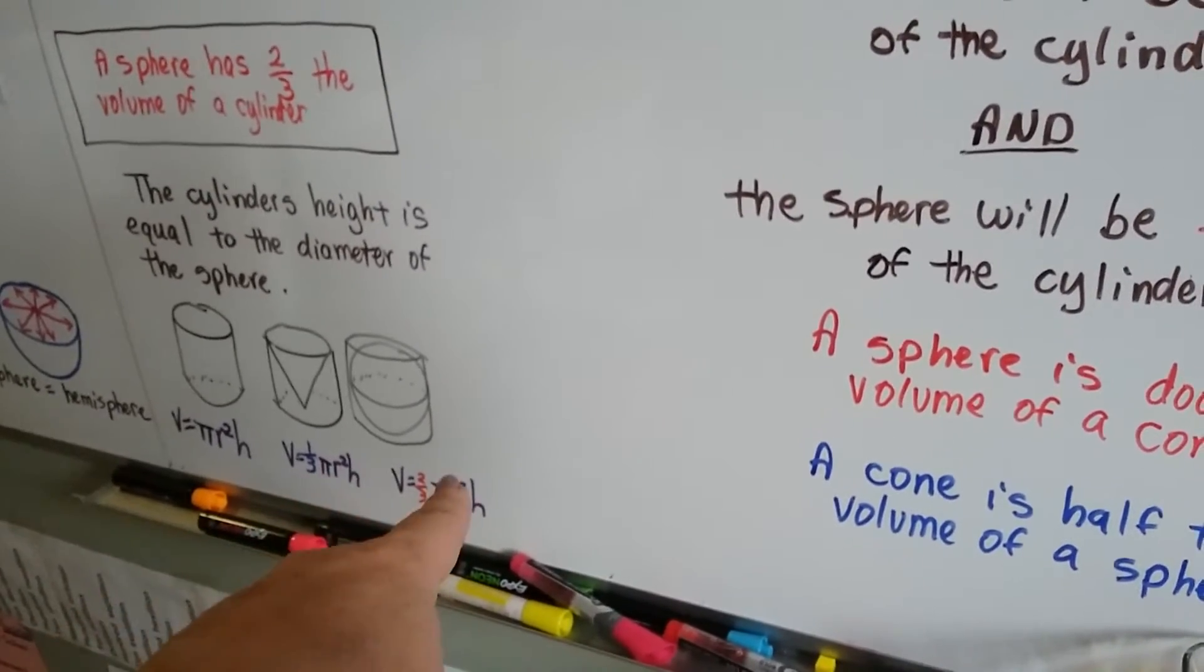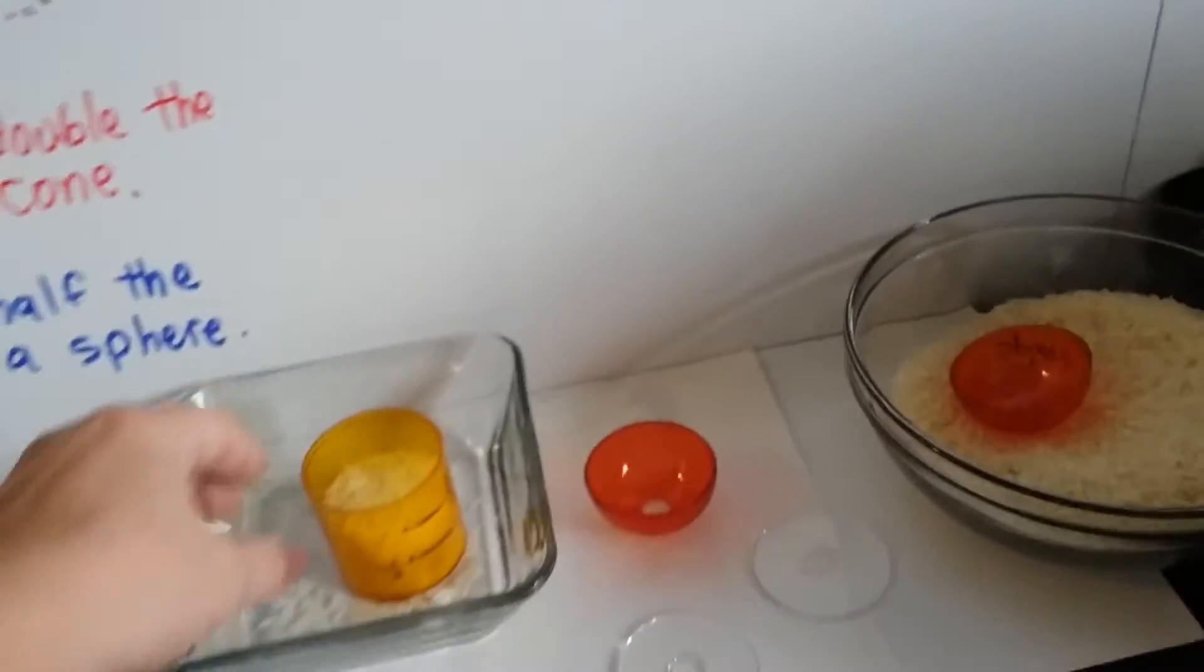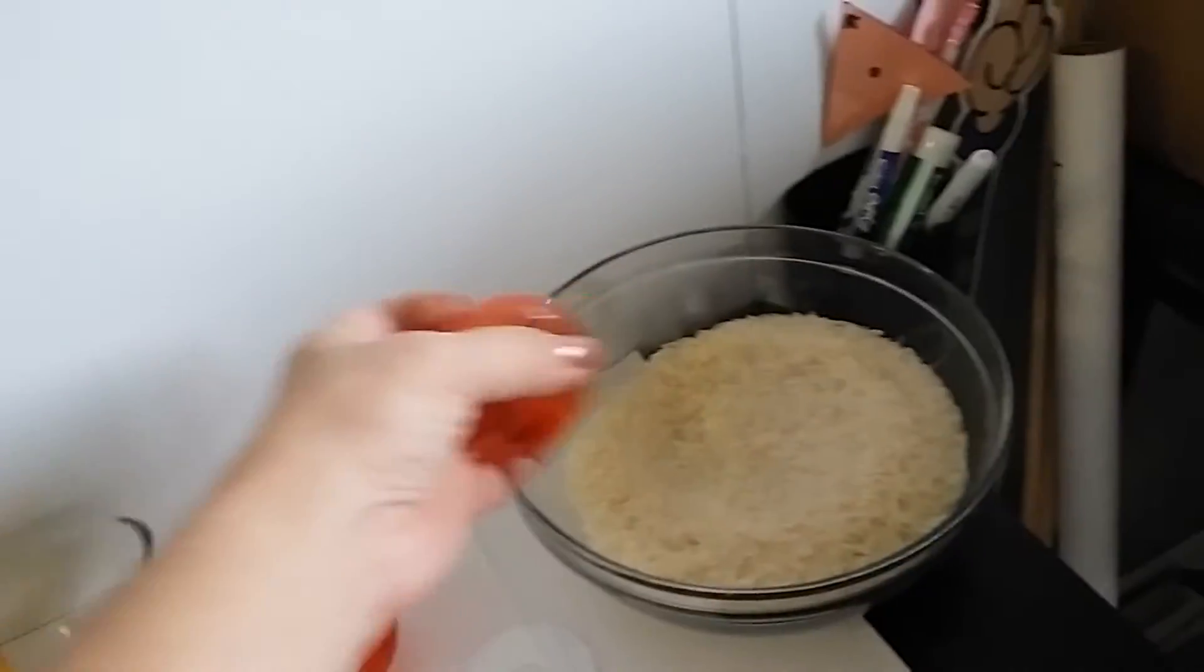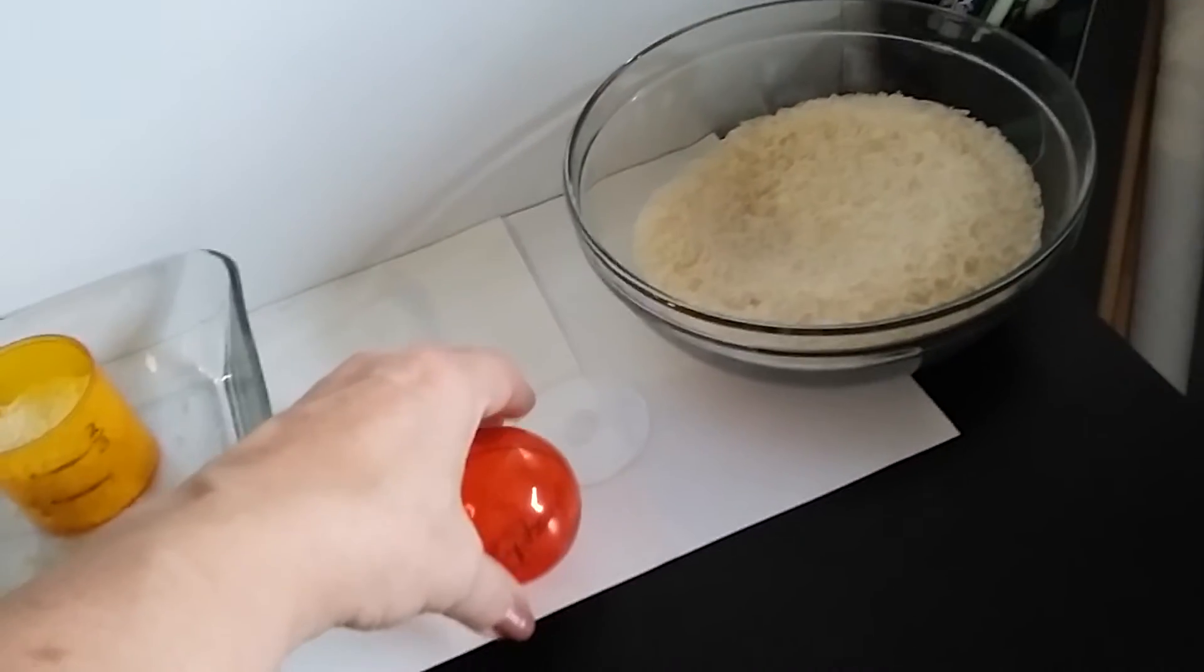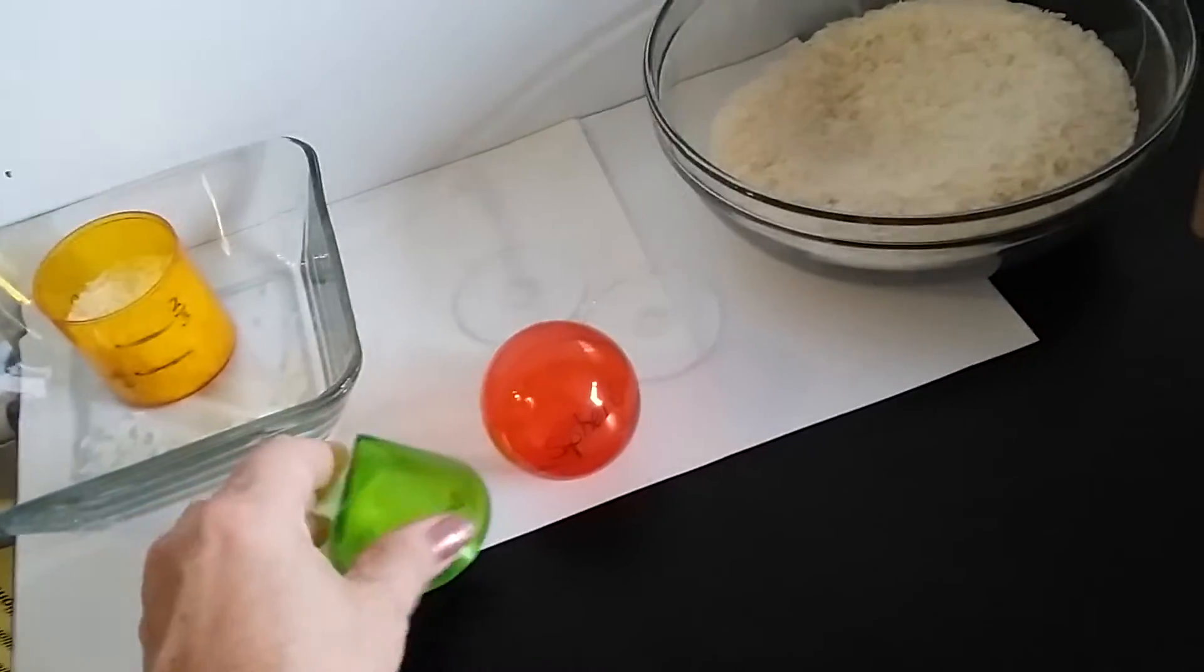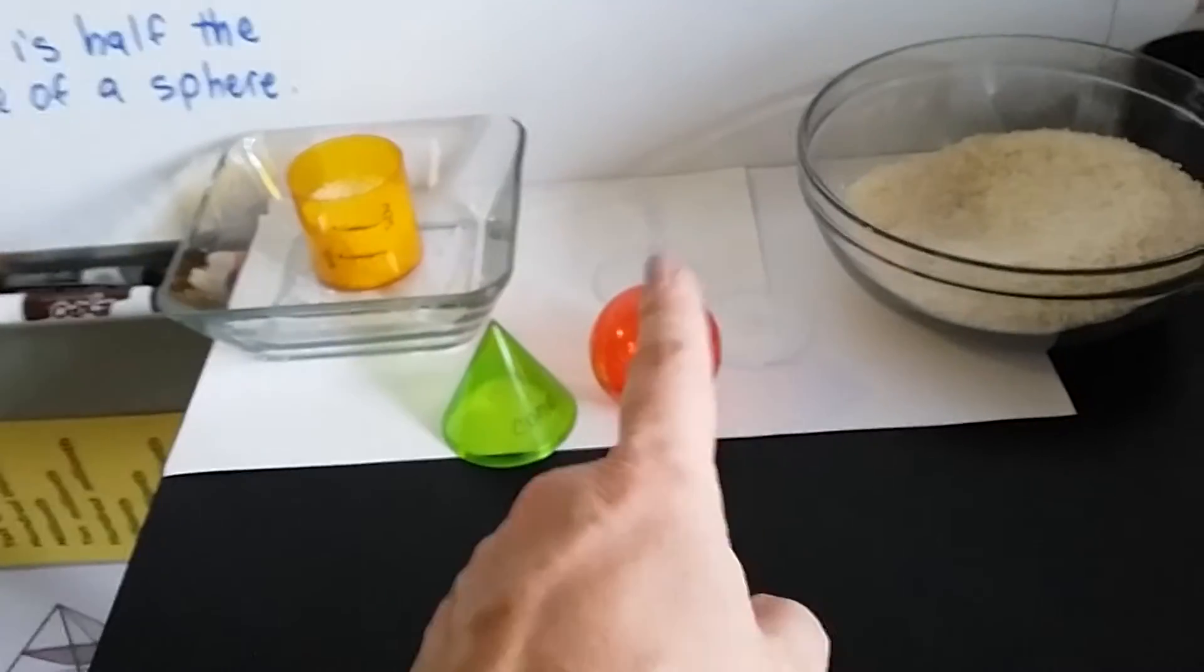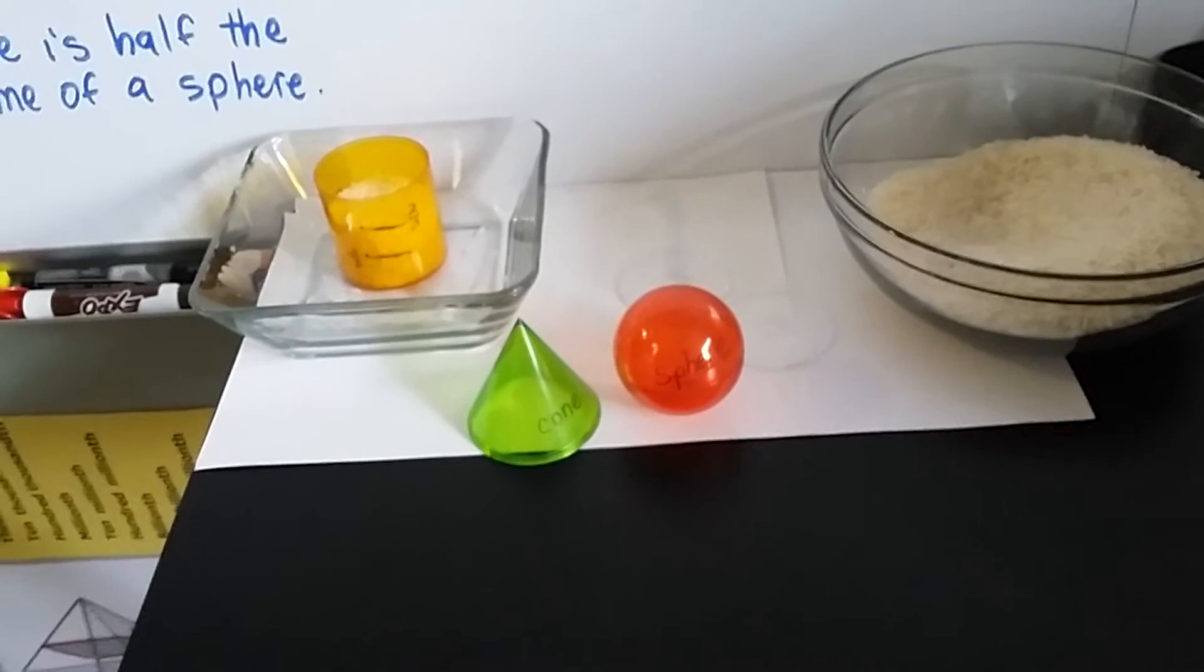They filled it one-third. They filled it two-thirds. Isn't that cool how that worked out? And because this filled it one-third of the way and a full sphere filled it two-thirds of the way, this cone is half of that sphere, and that sphere is twice as much as that cone in volume. You can even see it in the numbers.